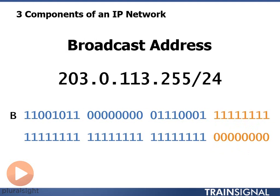The second type of address in a network is the broadcast address. The broadcast address has all ones in the host portion. So anytime I have all ones in the host portion of my address, I automatically know it's the broadcast address.